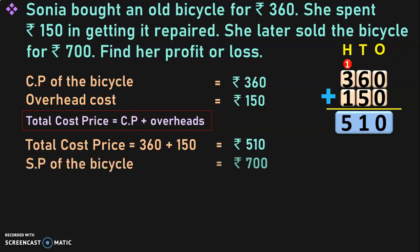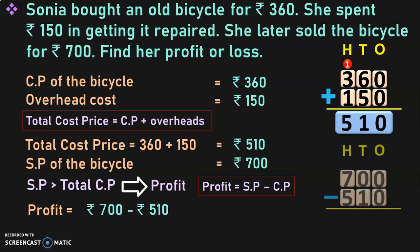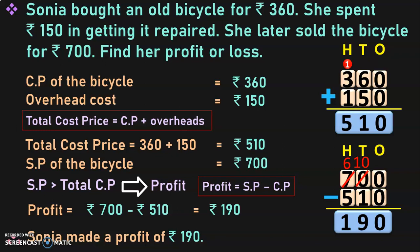Selling price of the bicycle is rupees 700. Selling price is greater than the total cost price, so we will have a profit. Profit equals SP minus CP: 700 minus 510. In the 1's place: 0; borrow from the 100's place to get 10 tens; 10 minus 1 is 9; 1 in the 100's place. The difference is rupees 190. Sonia made a profit of rupees 190.